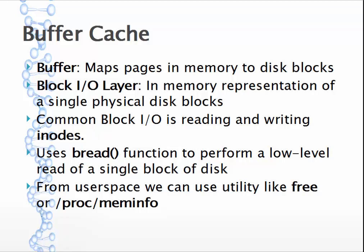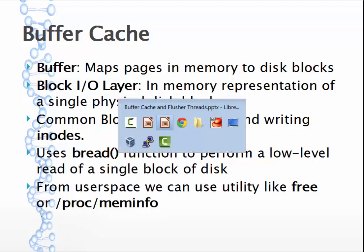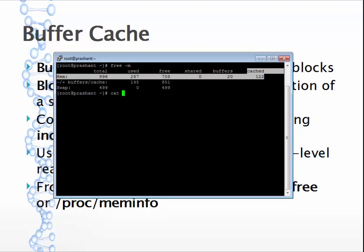Common operations include reading and writing inodes. Block IO operations use the BREAD function to perform a low-level read of a single block of a disk - block IO manipulates one single block at a time. To view your buffer cache, you can use the 'free' command or /proc/meminfo, which gives the same information.